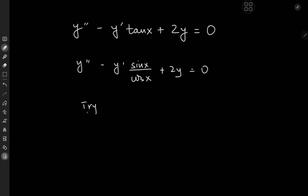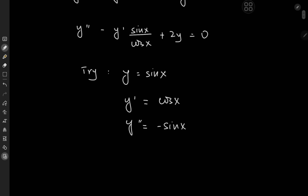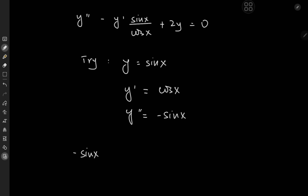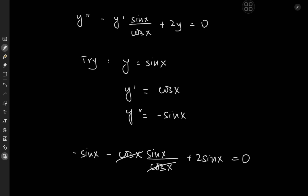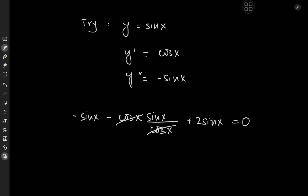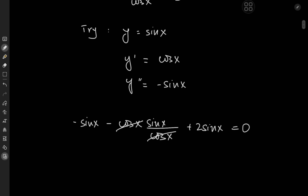So let's try y equal to sine x, because that gives us y prime equal to cosine x and y double prime equal to negative sine x. Plugging into our equation: we have negative sine x minus cosine x times sine x divided by cosine x plus two times sine x equal to zero. The cosine terms cancel out, giving us negative sine x minus sine x, which is negative two times sine x, plus two sine x — giving us zero equal to zero, which is true. So this is one of the solutions to our differential equation, and our educated guess is perfectly correct.